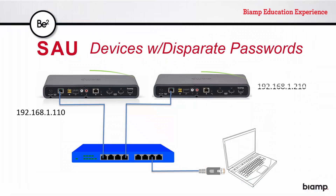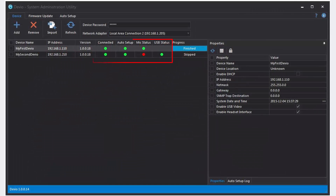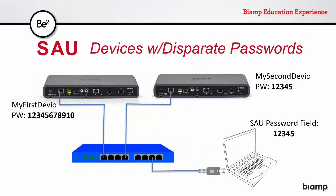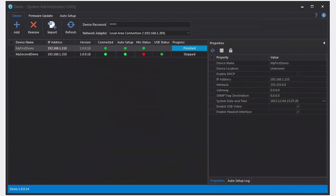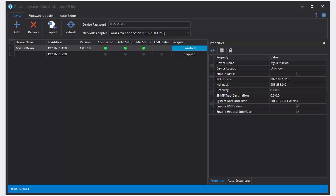To demonstrate this, I've put two Devios on the same subnet as my computer, configured them with identical passwords, and entered that password into the SAU, where they are both showing as available. I'm going to go ahead and change the password to the device named MyFirstDevio. Its connection status will change here in the SAU. If I go up to the password field and type in the new password, MyFirstDevio will reappear as available, but MySecondDevio's status will change — it is now grayed out.